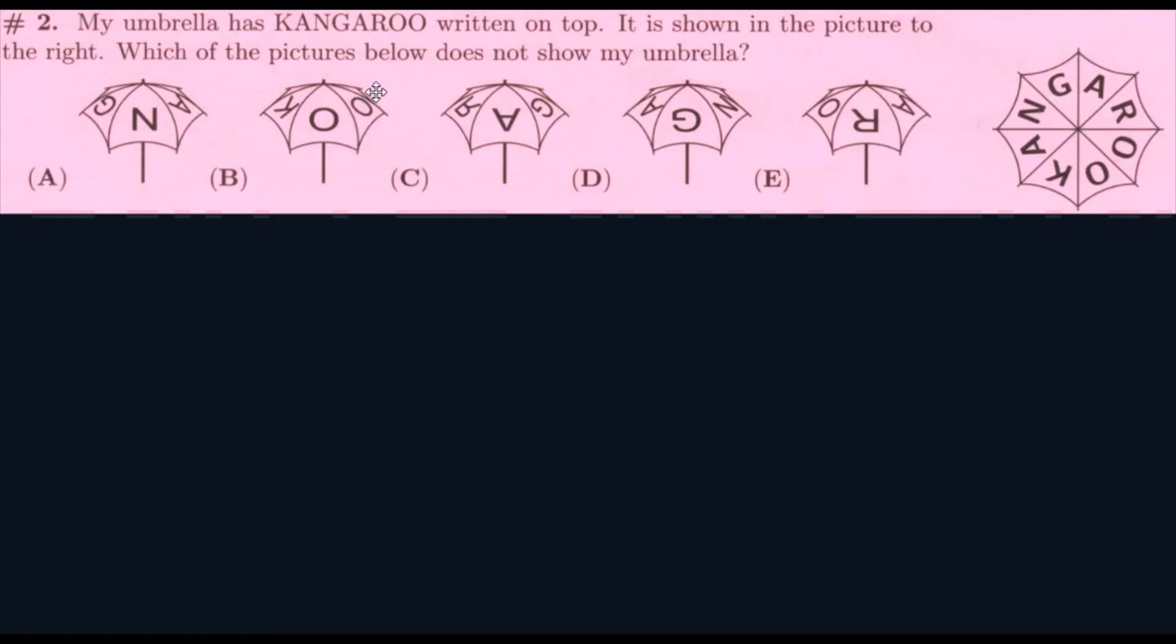And the second one is O, O, K, then G, A, R, and then N, G, A. So, all of them are placed in the right order. Now, we have to look at which, if any of them are backwards or upside down.